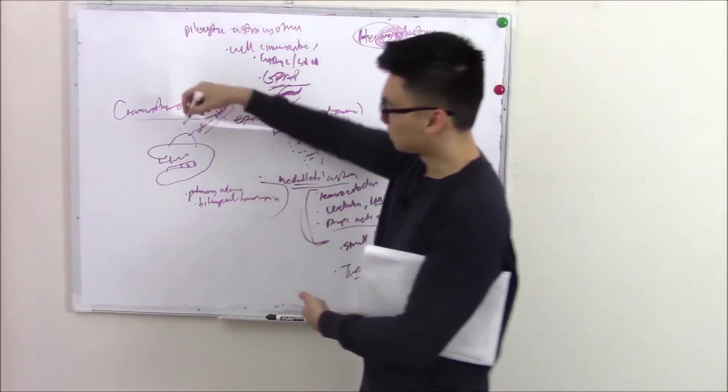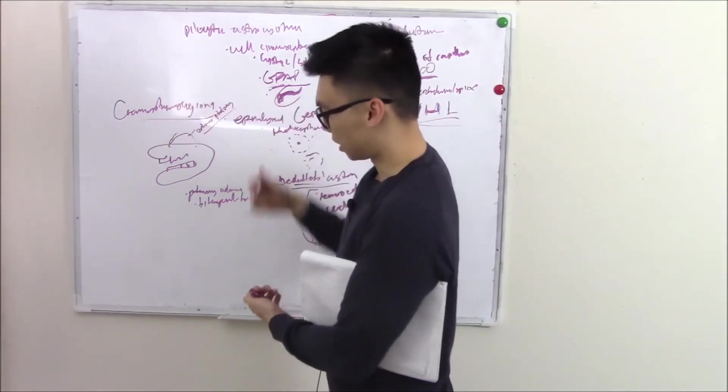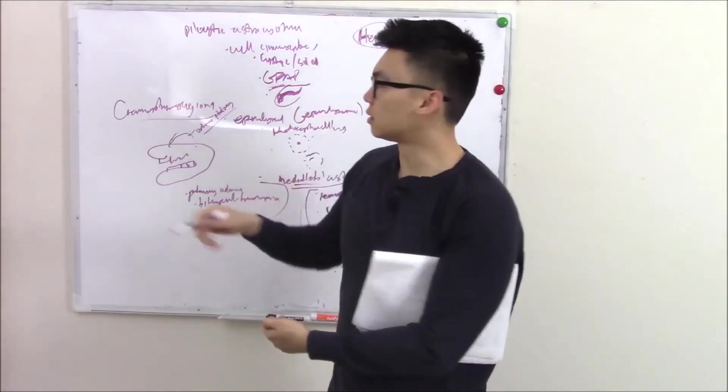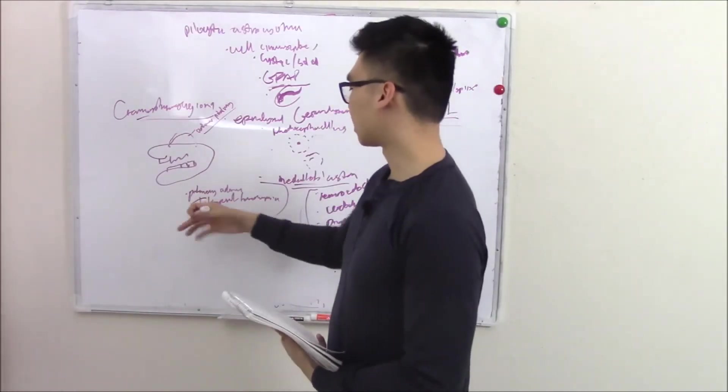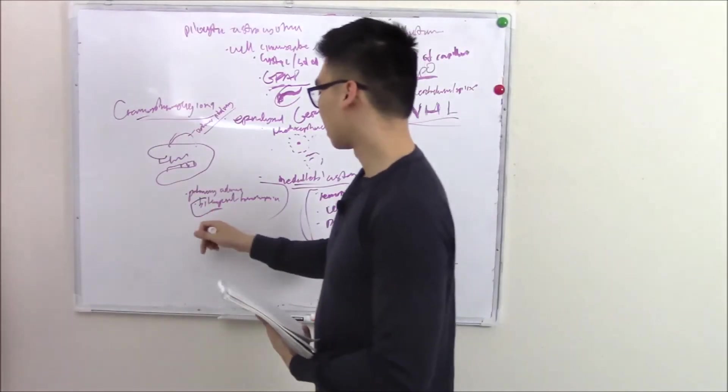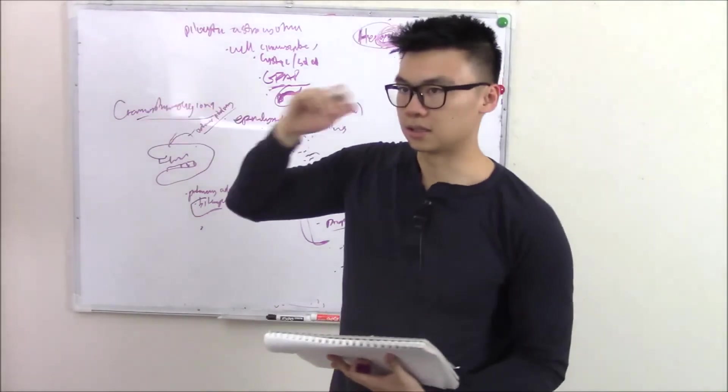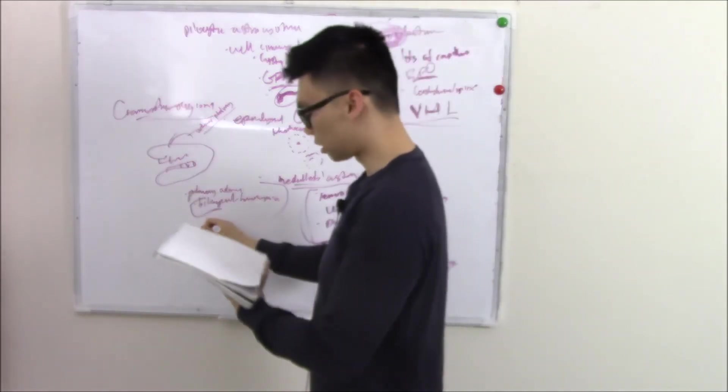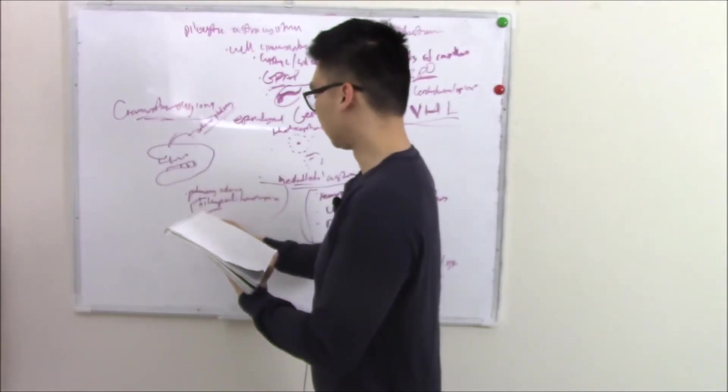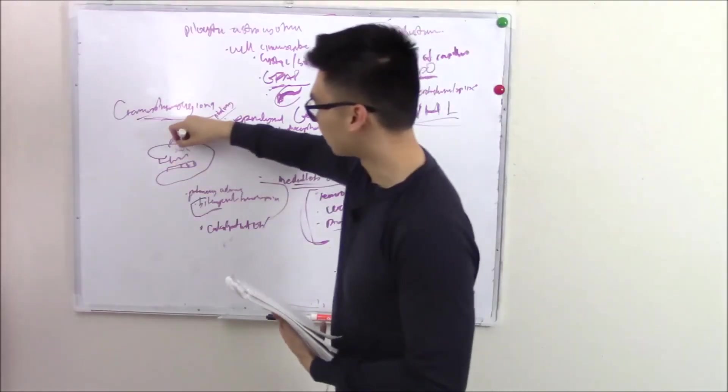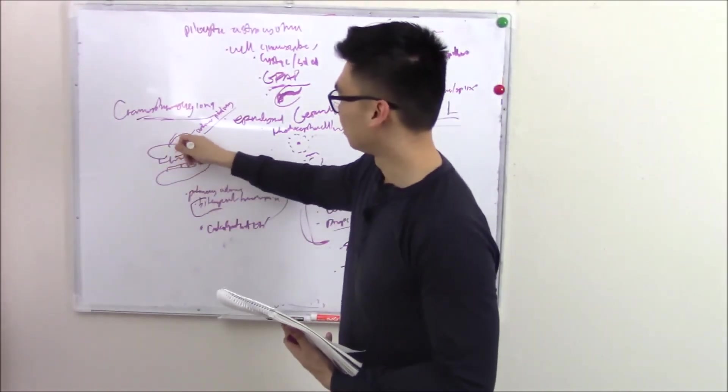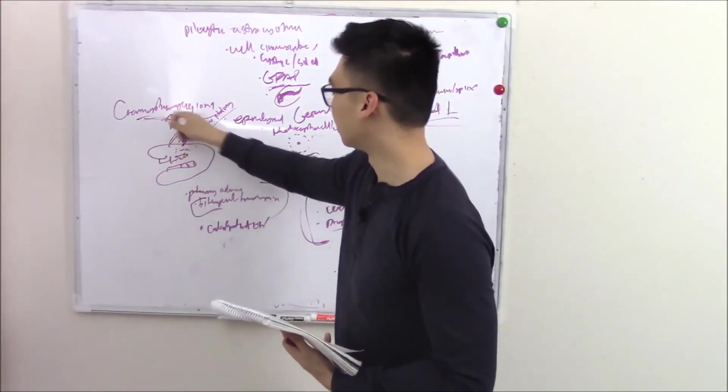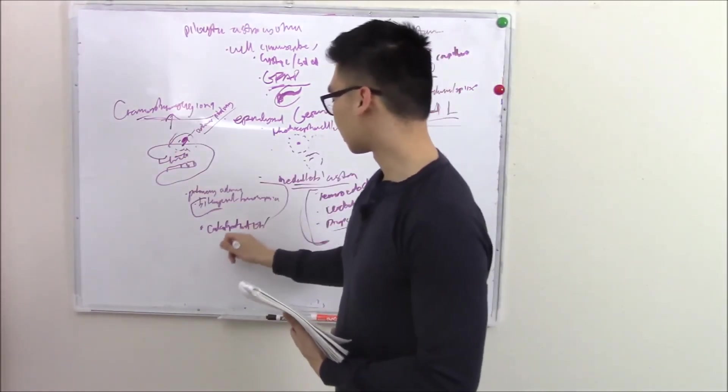And in kids, this pouch and this Rathke's pouch doesn't make pituitary adenoma. It makes craniopharyngiomas. You can still have the signs of bitemporal hemianopia, but when you biopsy the lesion, you're going to know it's not pituitary adenoma. You're going to know it's this because it'll have calcifications. Probably because some of the tissue that was supposed to make your teeth went up and made this instead. So you'll see calcifications, you'll also see a lot of cholesterol.